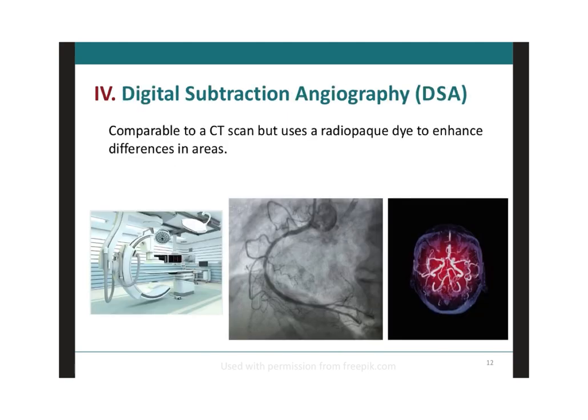Next we have digital subtraction angiography. Angio means blood vessels, so this provides an image of the blood vessels in the brain to detect problems with blood flow. The procedure involves inserting a catheter — a small thin tube — into an artery in the leg and passing it up to the blood vessels in the brain. Through this catheter, a dye is inserted, which allows us to see the blood vessels inside the brain and transfer the image to a computer for better contrast.